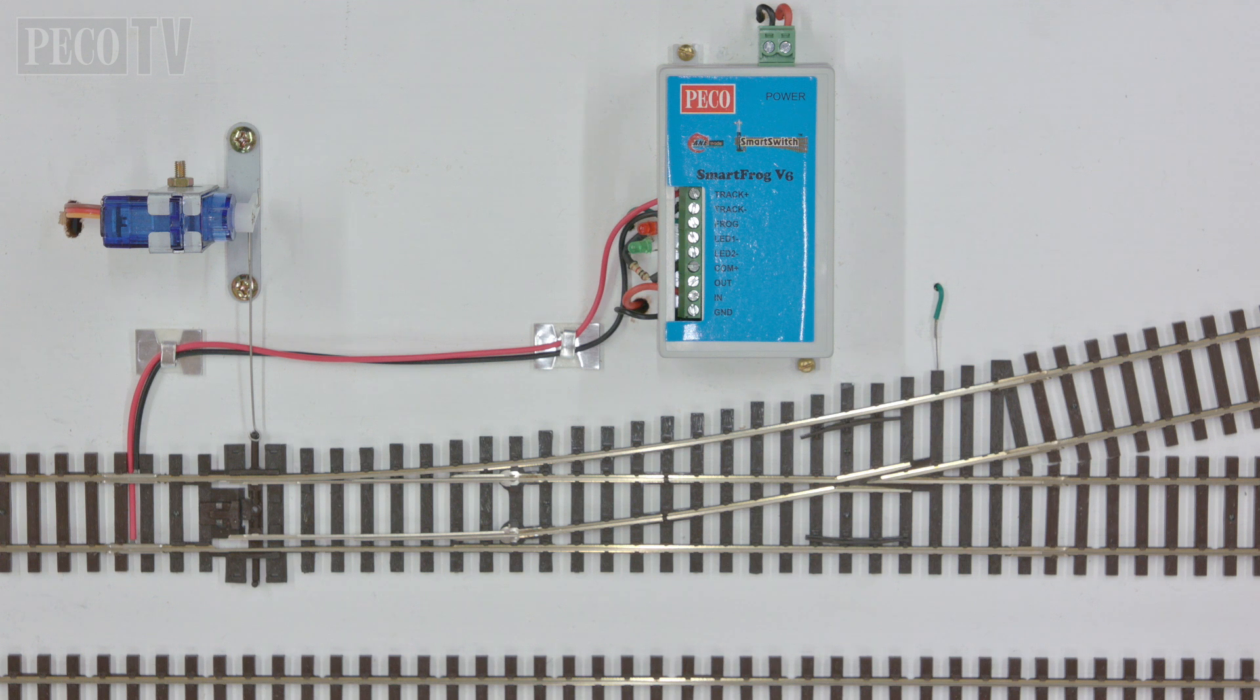If a short circuit occurs when the locomotive runs over the turnout, simply switch the two wires connected to the track positive and negative terminals.